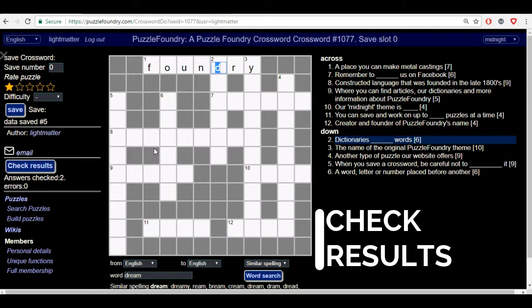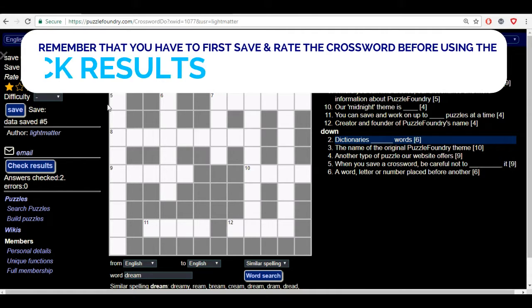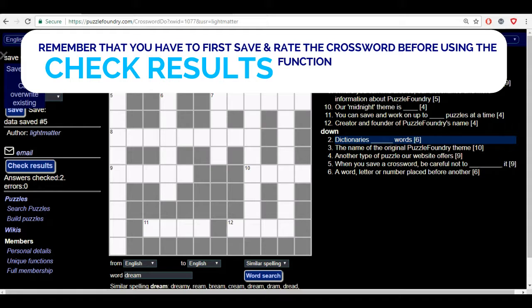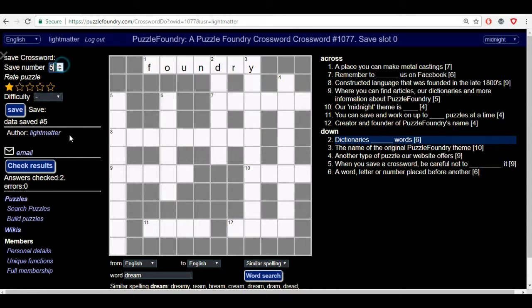Then I would like to quickly show you guys how the check results functionality works. First, before you can check your results, you first need to save your puzzle. So I'm going to be choosing save slot 6 and I'll be giving this puzzle, let's say, a 4 and rating it as an easy puzzle. By clicking save, it will say to you here that it has saved your puzzle now and it has saved it specifically here at number 6.